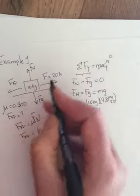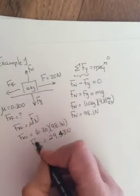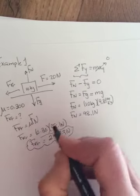So it's saying that friction is 29.43 newtons. But be careful.